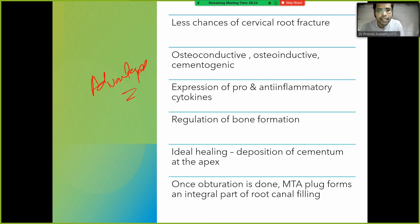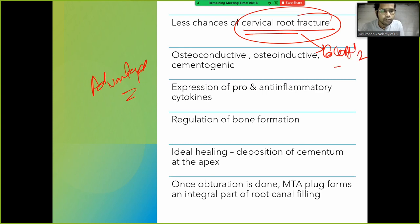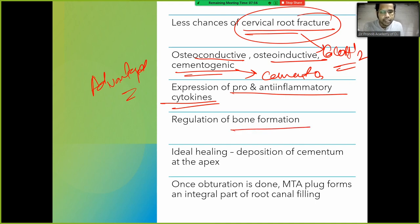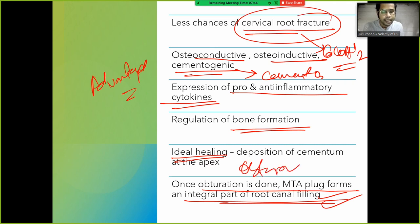Additional advantages of MTA include: less risk of cervical root fracture compared to calcium hydroxide; it is osteoconductive, osteoinductive, and cementogenic — helping in formation of cementum and bone; it promotes expression of anti-inflammatory cytokines; it enables regulation of bone formation and ideal healing; and once obturation is done, MTA forms an integral part of the root canal filling.